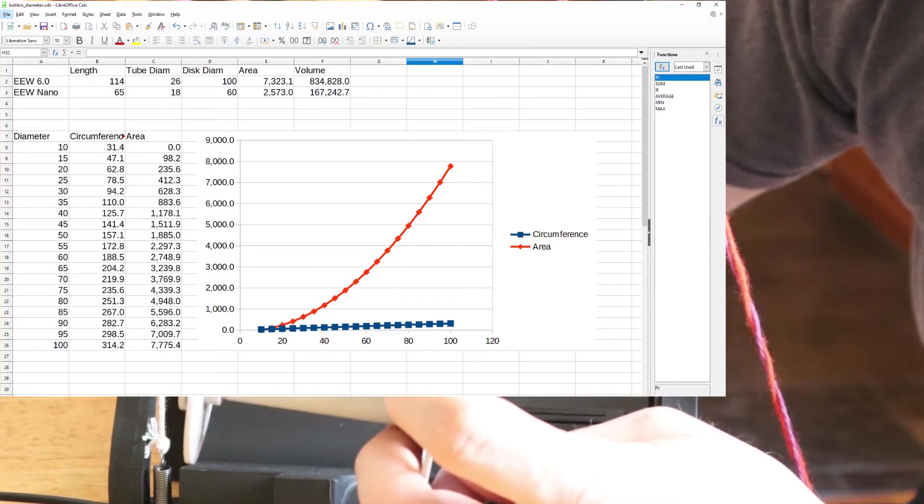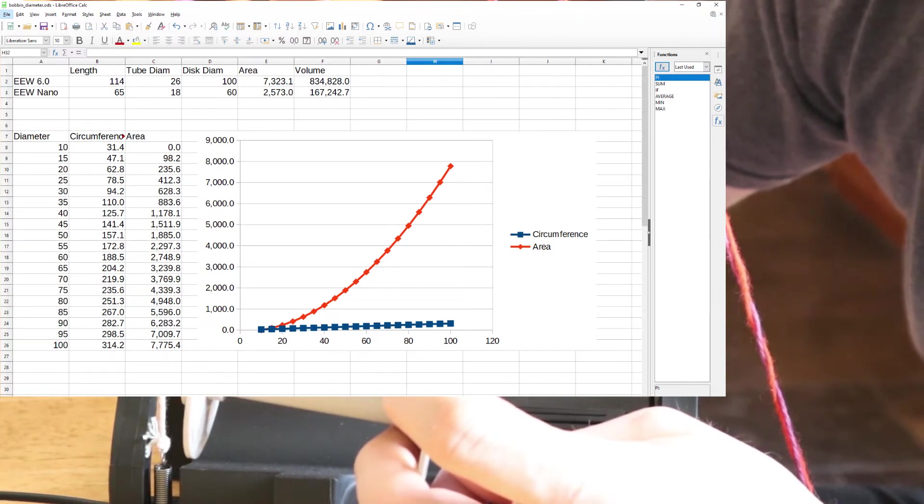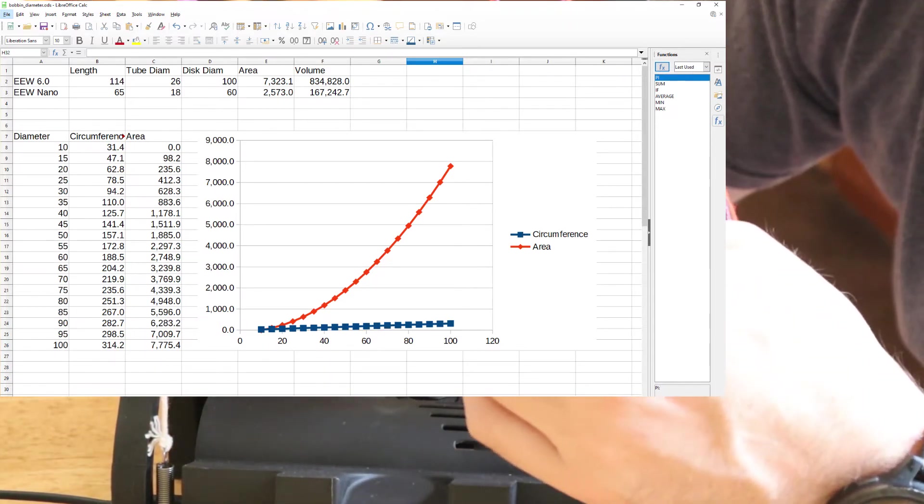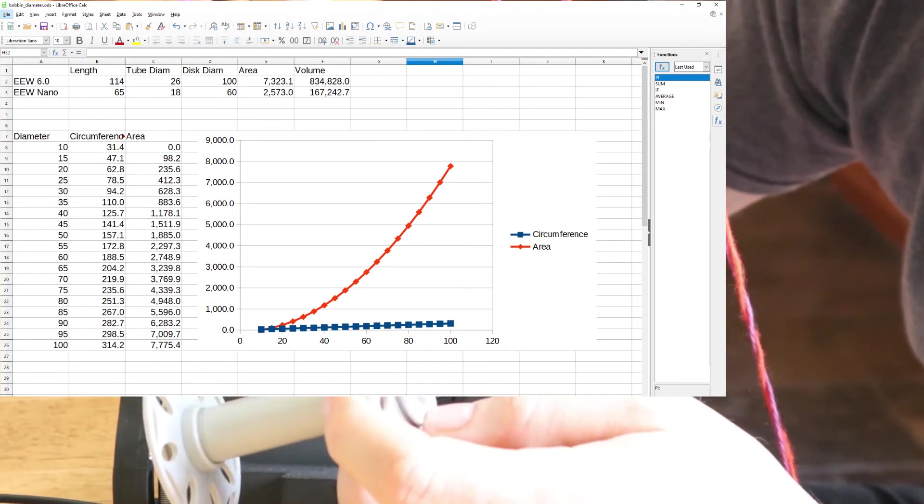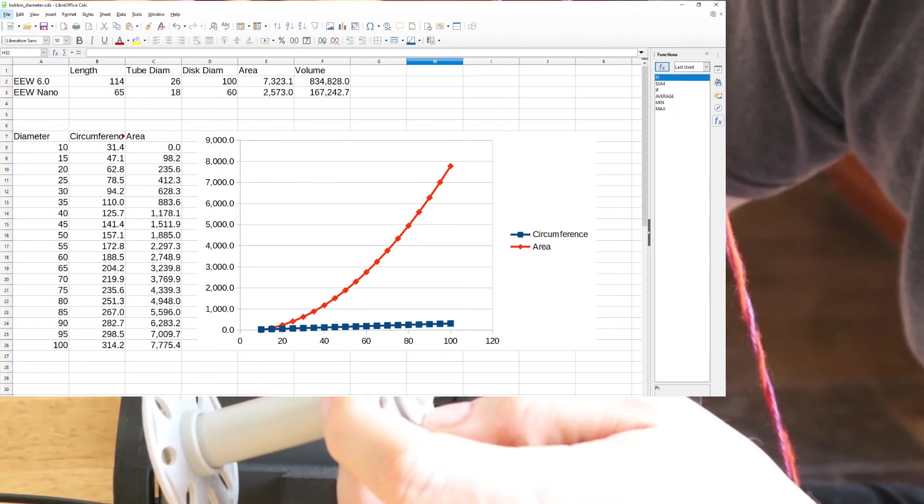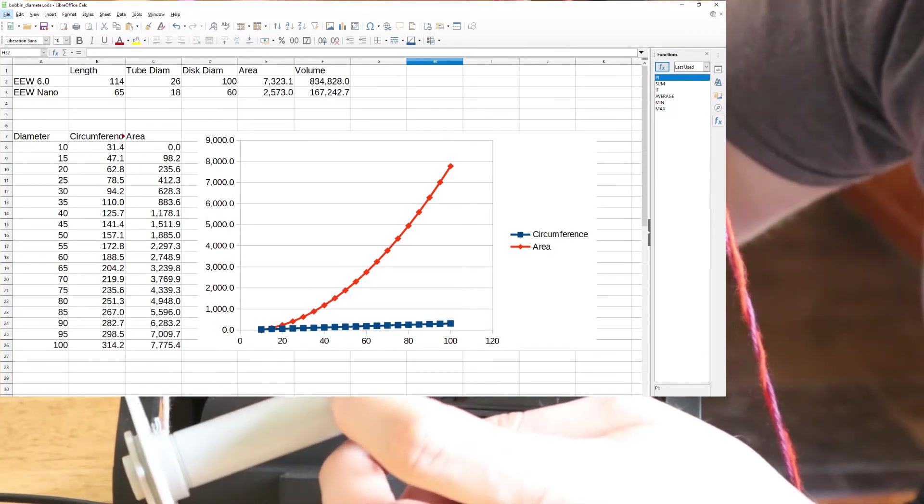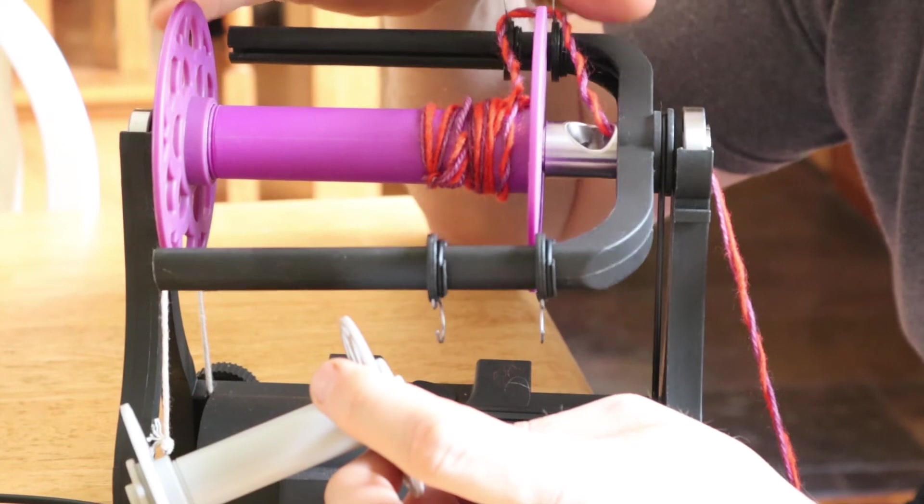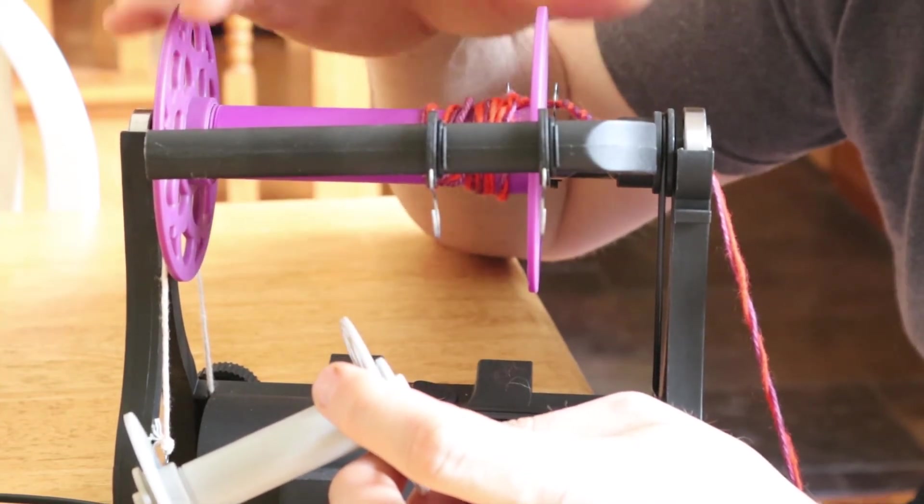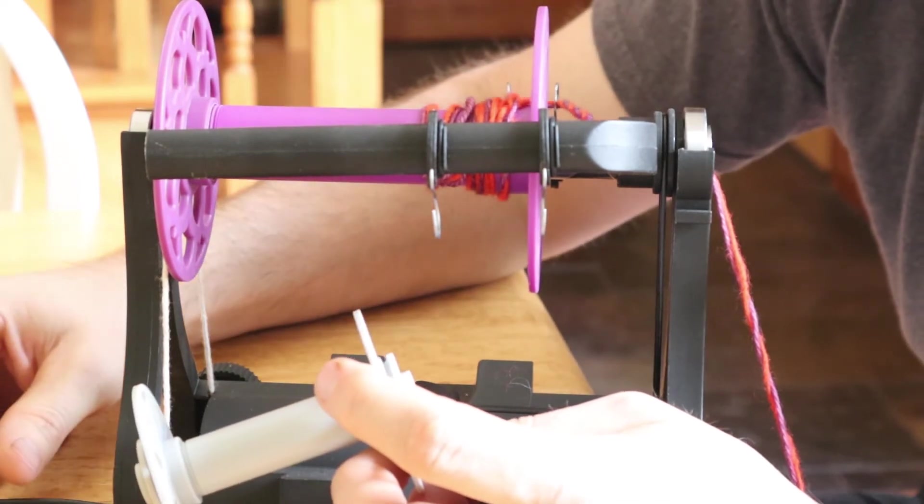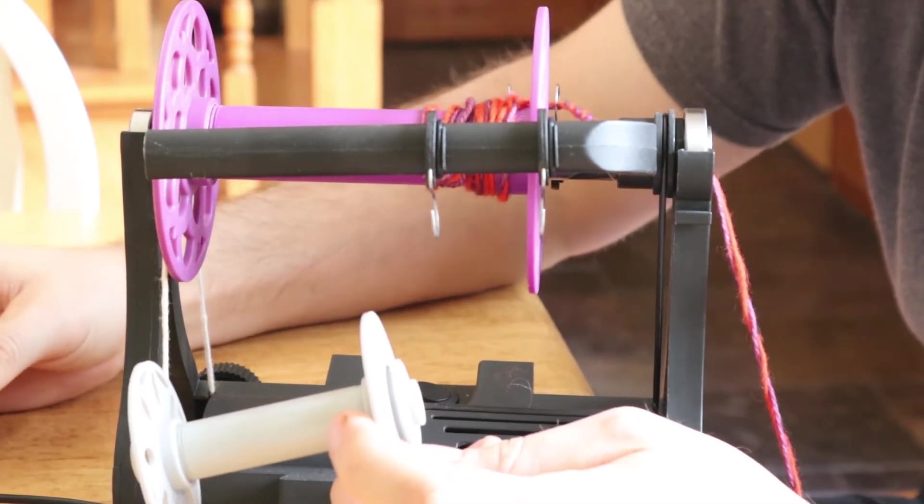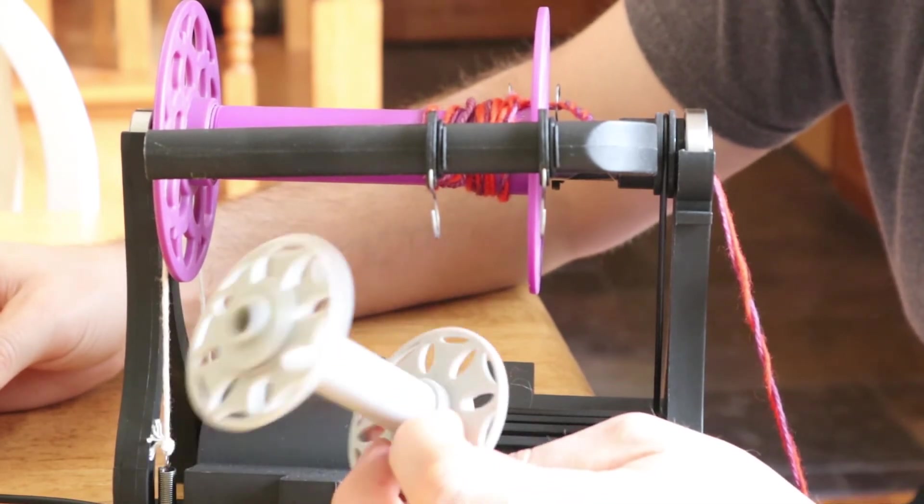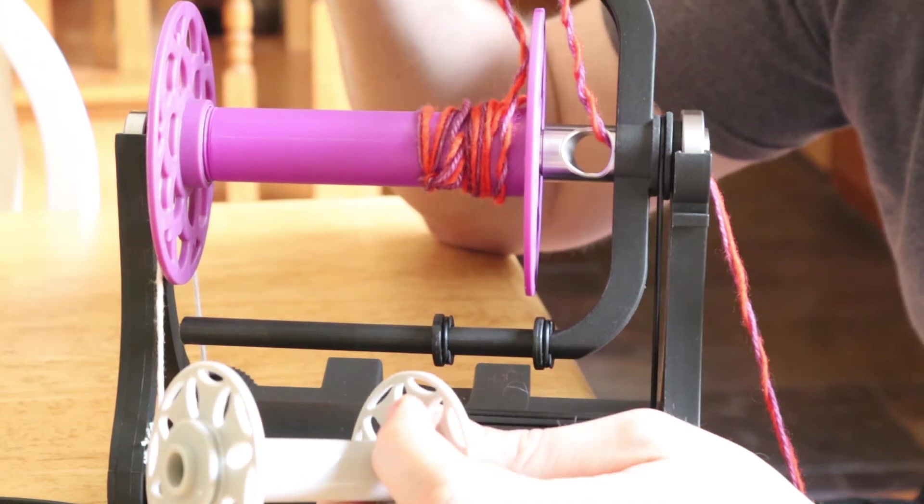It also shows that the volume increases exponentially and that's because the volume of a cylinder increases with the radius squared. So even though the nano bobbin's diameter isn't nearly twice as big, it's actually more than four times the volume because of this exponential increase in the size. So making a little bit bigger bobbin like the six versus the electric eel wheel five—the bobbins aren't that much bigger but the bobbins here will hold twice as much yarn as a traditional bobbin and that's one of the reasons I ended up going to a slightly bigger bobbin. I was like I might as well make them a little bit bigger and then people will be able to hold a lot more yarn than your typical bobbin and that's what I've gone with for the electric eel wheel six.